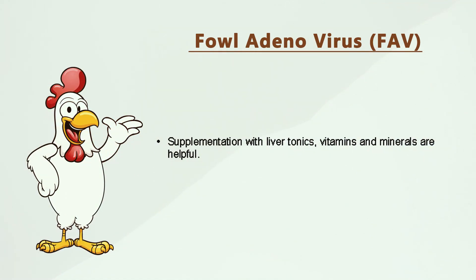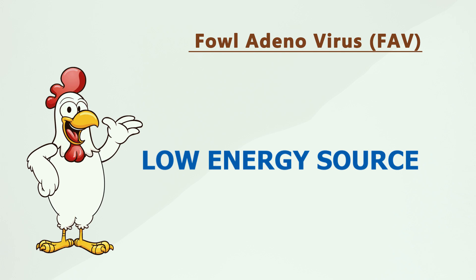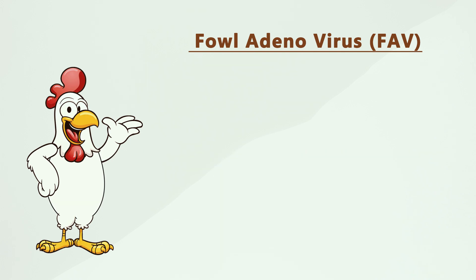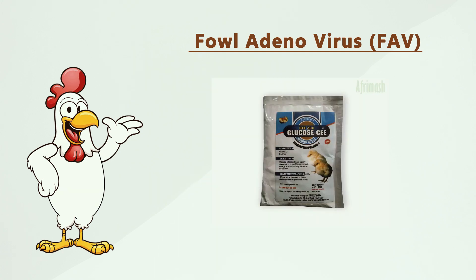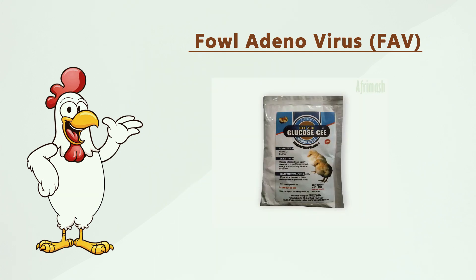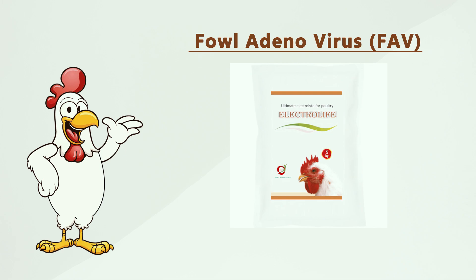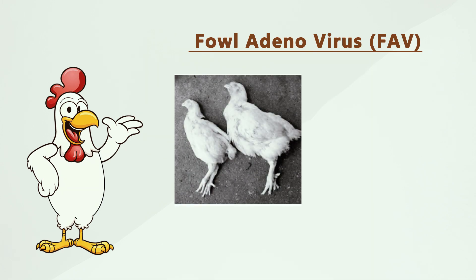Iodine compounds in drinking water can be less effective. For symptomatic treatment, when livers are infected, liver tonics, extra vitamins, and extra trace minerals should be provided. Since the disease damages the energy source, you should supply an instant source of energy like glucose and electrolytes to address hypoglycemic conditions.